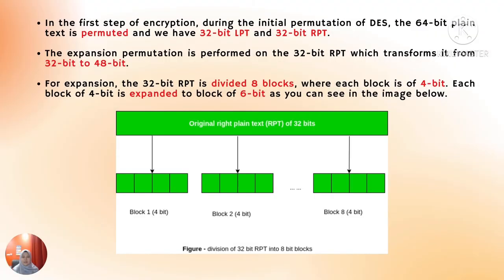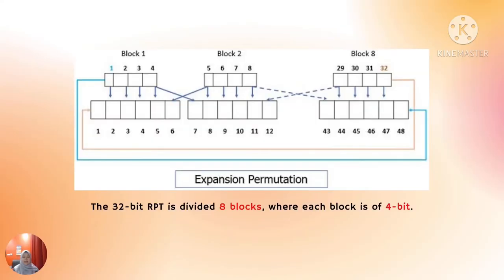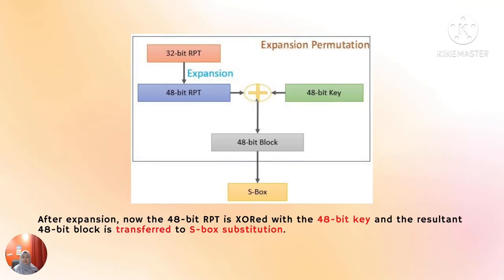For expansion, the 32-bit RPT is divided into 8 blocks where each block is 4 bits. Each block of 4 bits is expanded to a block of 6 bits, as shown in the image below. The extreme 2 bits of each block are repeated and the middle 2 bits are passed on as they are. After expansion, the 48-bit RPT is XORed with the 48-bit key and the resultant 48-bit block is transferred to S-box substitution.